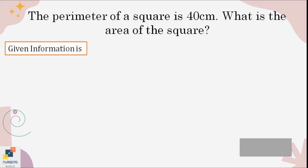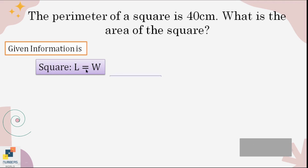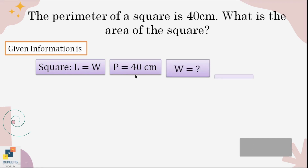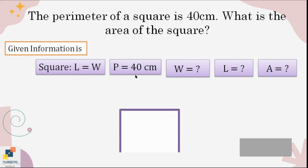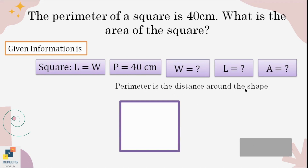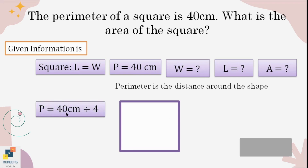Example three: the perimeter of a square is 40 centimeters — what is the area? Sorting the given information: it's a square, so length and width are the same. The perimeter is 40 cm, and length, width, and area are all missing. Since the perimeter is the total distance around the shape and a square has four equal sides, we divide 40 by 4 to find one side.